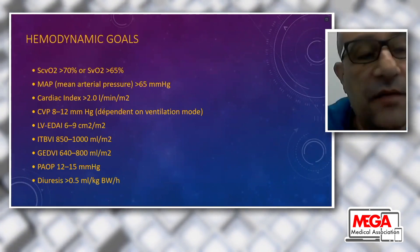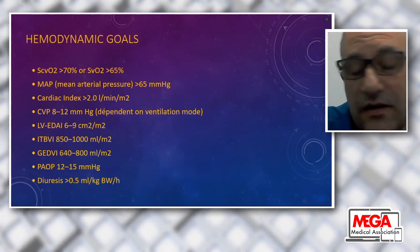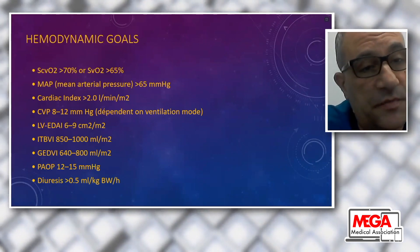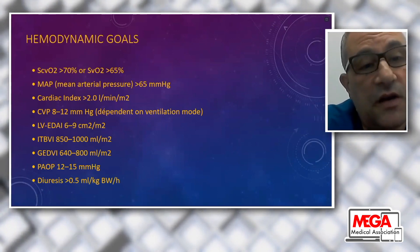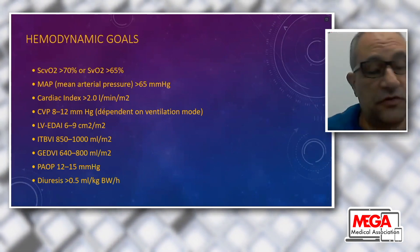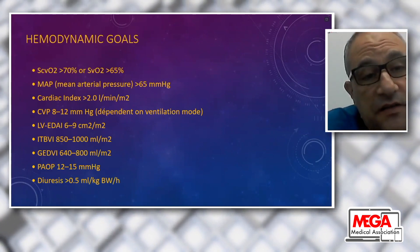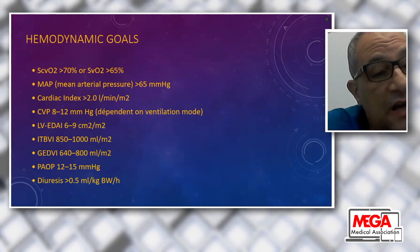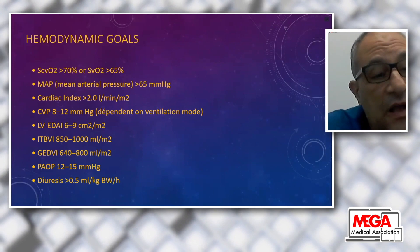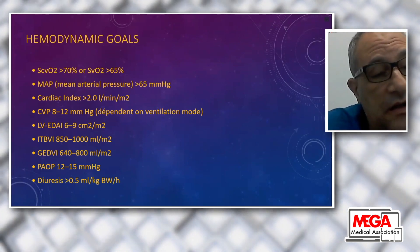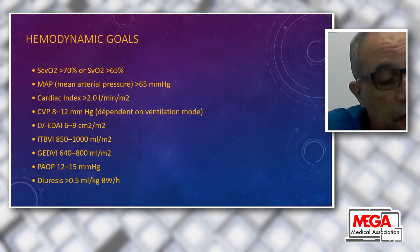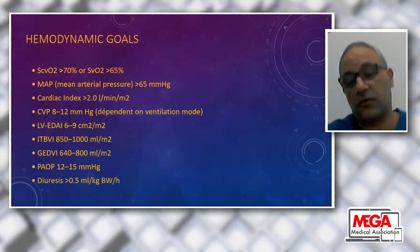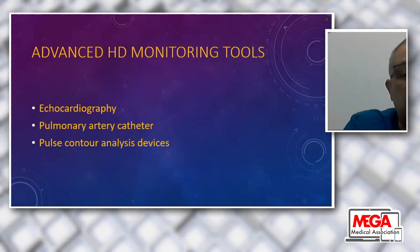Our hemodynamic goals for critically ill cardiac surgical patients include: central venous oxygen saturation more than 70%, mixed venous oxygen saturation more than 65%, mean arterial blood pressure more than 65 mmHg, cardiac index more than 2 L/min/m², CVP 8–12 mmHg, left ventricular end-diastolic area 6–9 cm²/m², intrathoracic blood volume index 800–1000, global end-diastolic volume index 600–800 mL/m², pulmonary artery occlusion pressure 12–15 mmHg, and diuresis more than 0.5 mL/kg/hour.